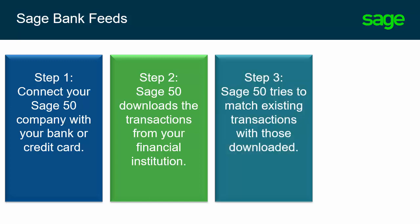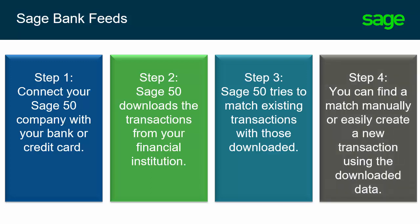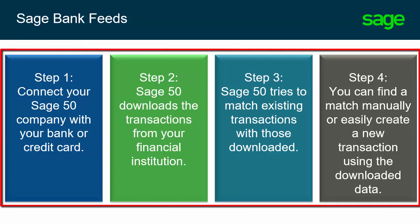Sage 50 tries to match existing transactions with those downloaded. Additionally, you can find a match manually or easily create a new transaction using the downloaded data. Let's see how to connect to Sage Bank Feeds, how to match transactions manually, and how to easily create transactions using the downloaded data.